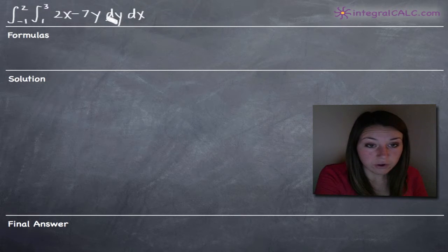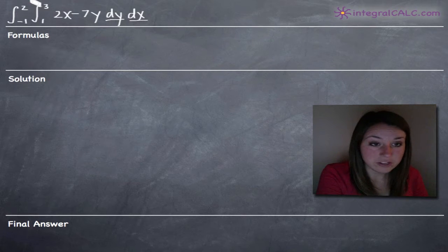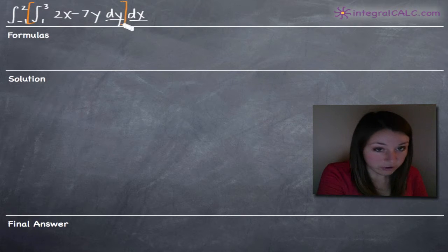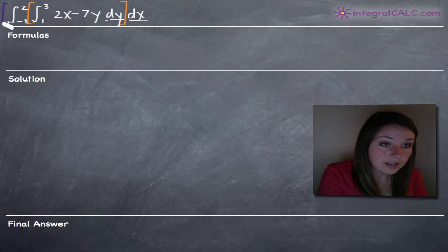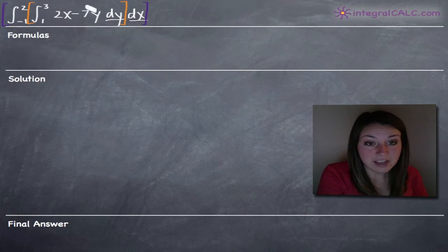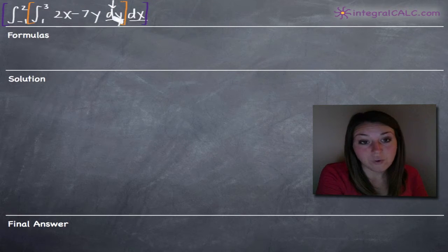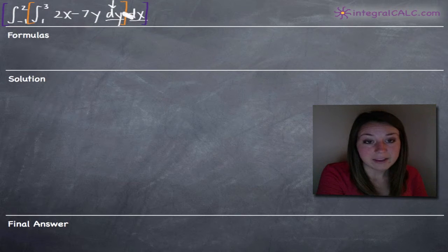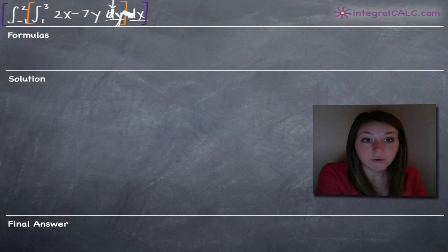The crucial thing here is the order of dy dx. What it tells us is that the first thing we want to pay attention to is the inner integral. We've got an inner integral and an outer integral, and we want to integrate from the inside out. Everything inside tells us we're going to take the integral first with respect to y, because dy is the inner notation here and dx is on the outside.